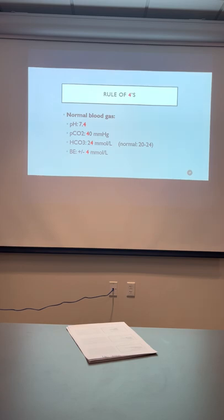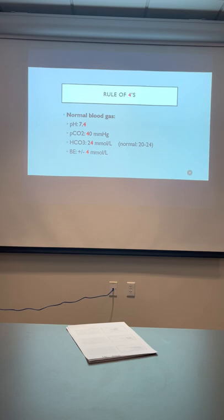The rule of fours is a really good way to remember the normal parameters for the four most important components of your blood gas — they all end in or start with four. A normal pH is 7.4. PCO2 normal is 40 — under anesthesia you want to keep their end-tidal CO2 around 35 to 45. Bicarb is normal at 24. Base excess is normal between plus 4 and minus 4.